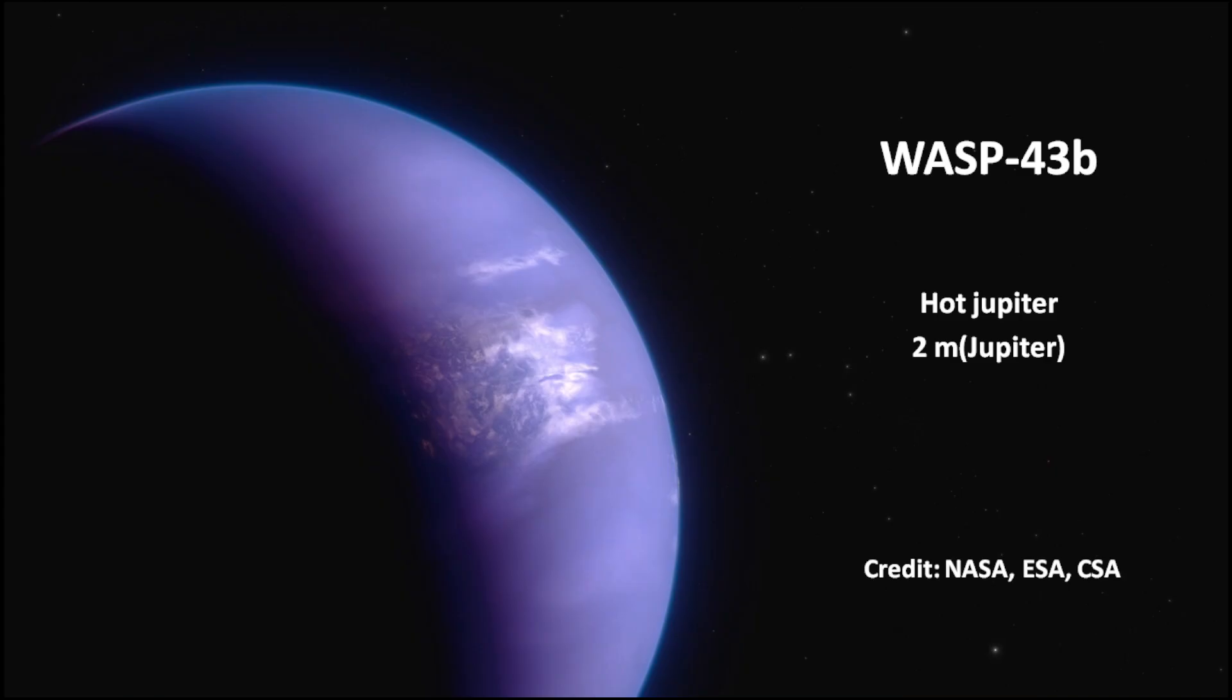The hot Jupiter WASP-43b, discovered in 2011, orbits the star at a distance of just 2 million km.